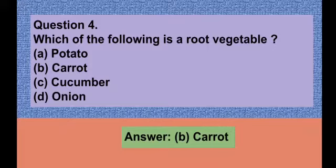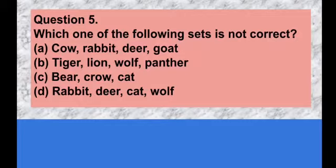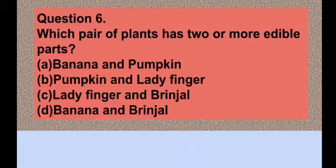Question number five: Which one of the following sets is not correct? Option A cow, rabbit, deer, goat; option B tiger, lion, wolf, panther; option C bear, crow, cat; option D rabbit, deer, cat, and wolf. You have to look at all the options carefully. The correct answer is option D — rabbit, deer, cat, and wolf.